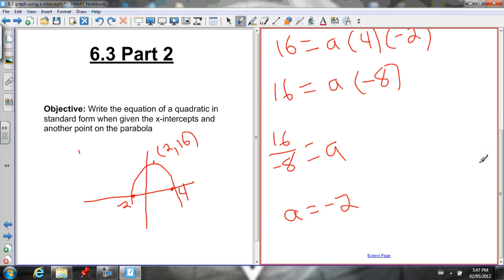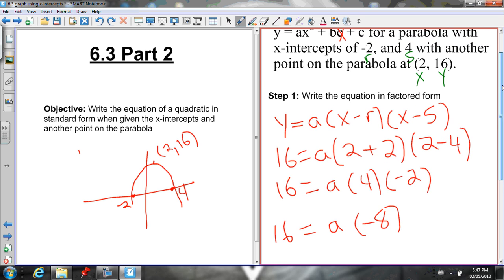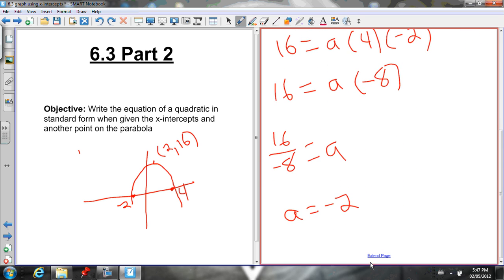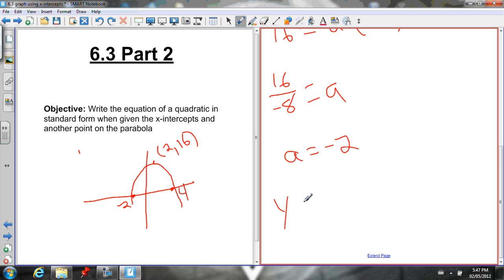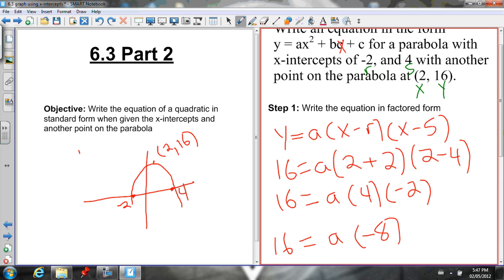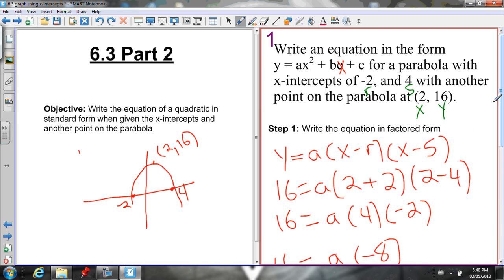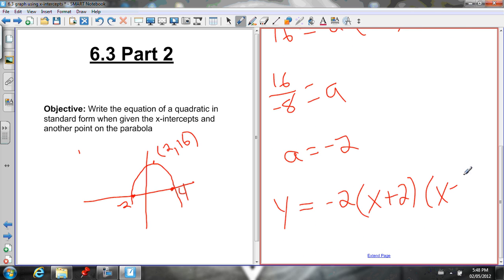So now that we have our a value, we can write this in factored form. Remember, when we write our final equation, we plug in for everything except for x and y, because this equation has to be the general equation for all points on the parabola. So we know a is negative 2. x minus r, we know r is negative 2, so x minus negative 2 becomes x plus 2. And x minus s, our s value is 4, so x minus 4 is our last factor. So that's the equation in factored form.